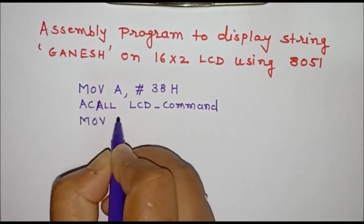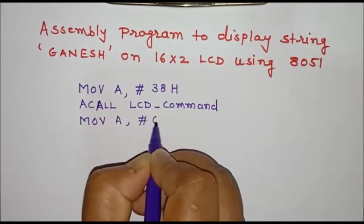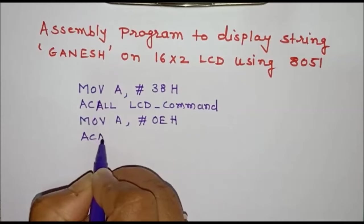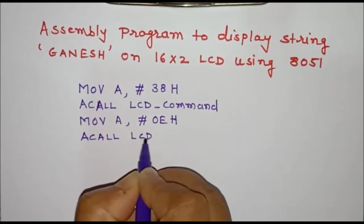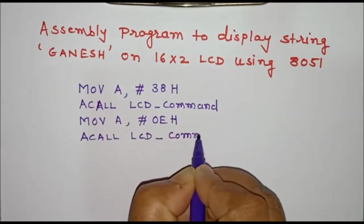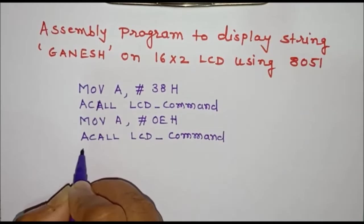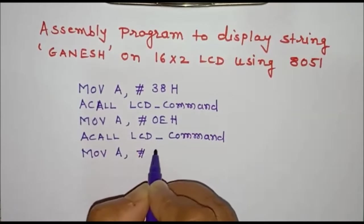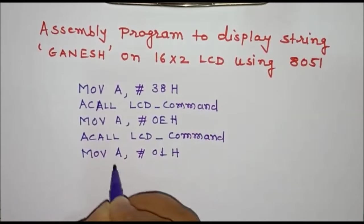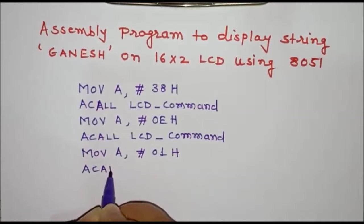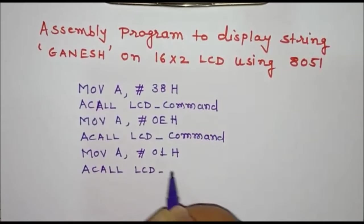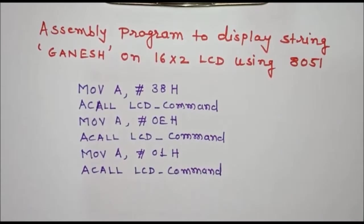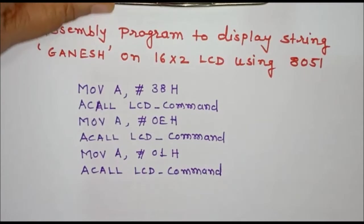The next command to write in the command register is 0EH, which sets cursor on and display on. We call the LCD_command subroutine again. The next command is 01H, which clears the display. We store it in the accumulator and call LCD_command again. These three commands are used for initialization of the LCD.